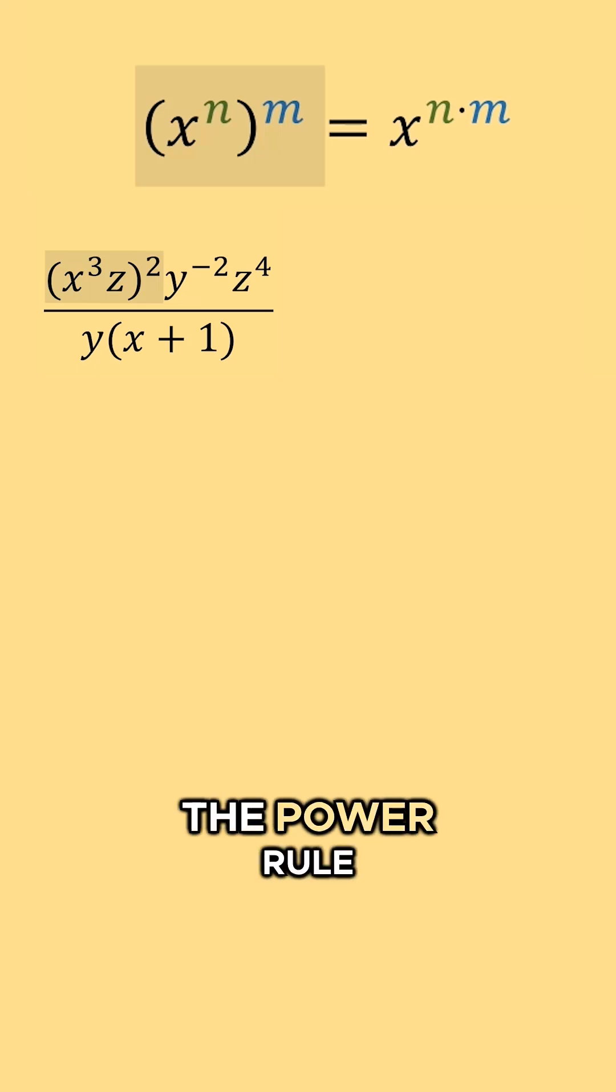And once again, if we use the power rule to rewrite this, we would distribute the two into the power of both x to the third and z to the one, which will then give us x to the three times two times z to the two.